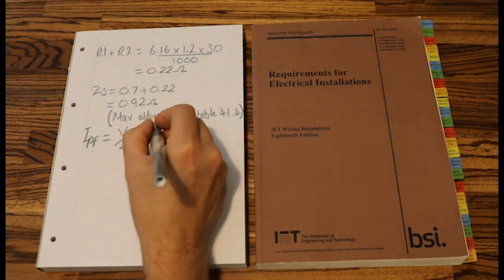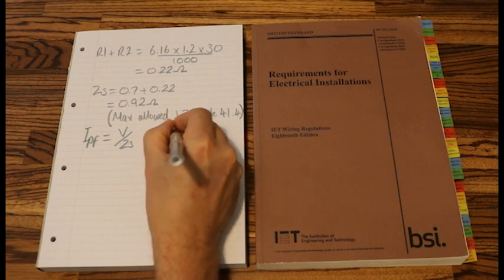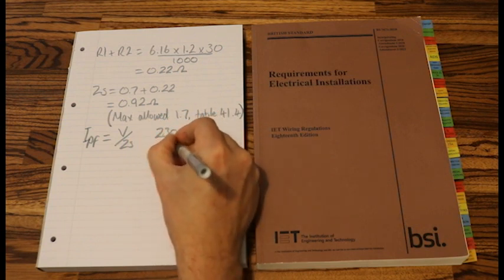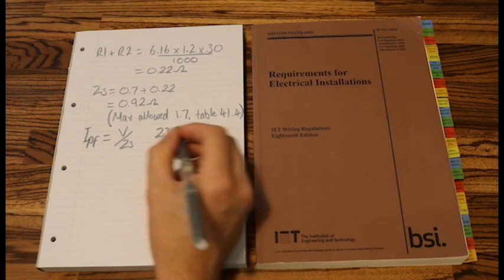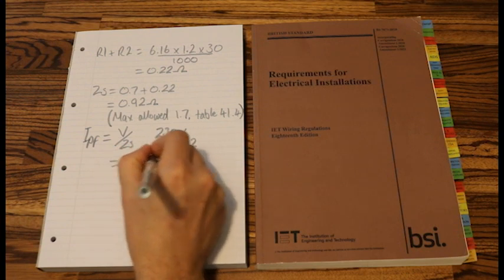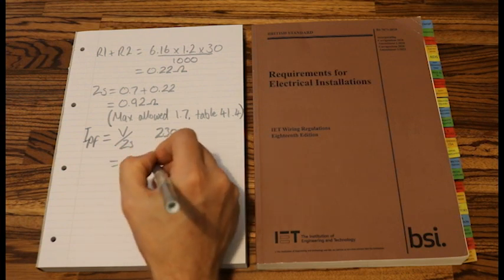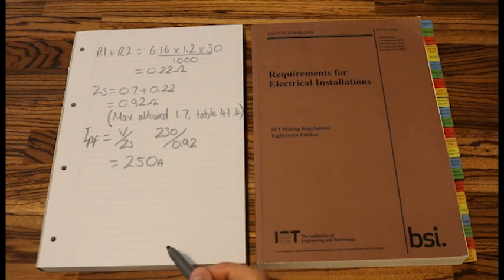So let's add our values in. We will have 230 divided by 0.92, and that would equal 250. And that is amps, because we are having a measure of I current.